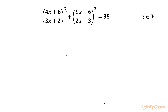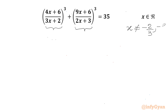Let's get started by writing our denominators cannot be 0. So 3x plus 2 cannot be 0, and 2x plus 3 cannot be 0. So our solutions cannot be negative 2 over 3 and negative 3 over 2.